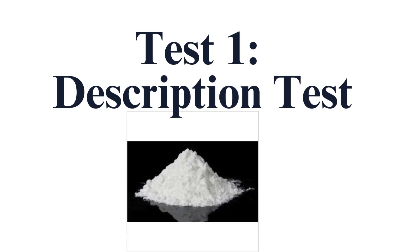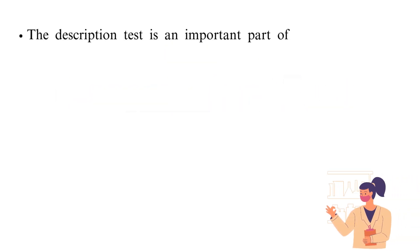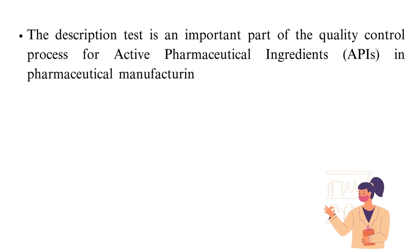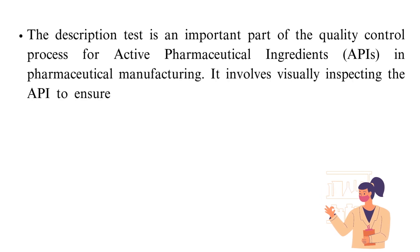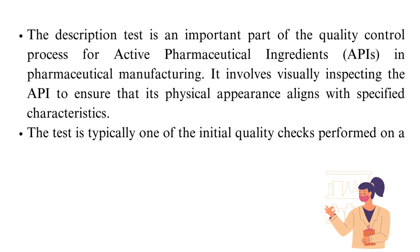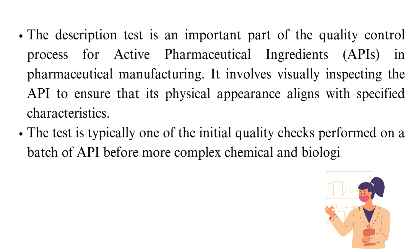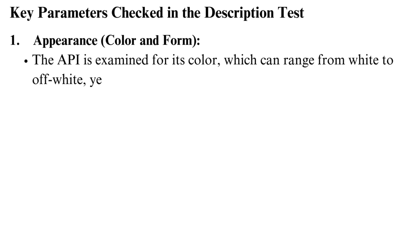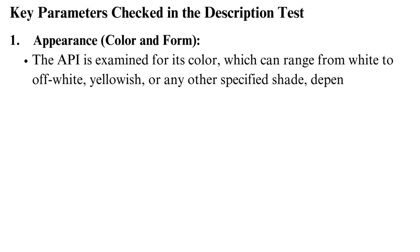Test 1: Description Test. The description test is an important part of the quality control process for active pharmaceutical ingredients in pharmaceutical manufacturing. It involves visually inspecting the API to ensure that its physical appearance aligns with specified characteristics. The test is typically one of the initial quality checks performed on a batch of APIs before more complex chemical and biological tests are conducted. Key parameters checked include appearance, color, and form — the API is examined for its color, which can range from white to off-white, yellowish, or any other specified shade, depending on the chemical structure.